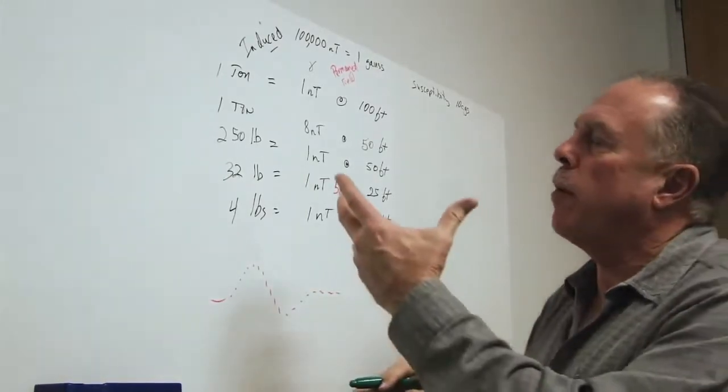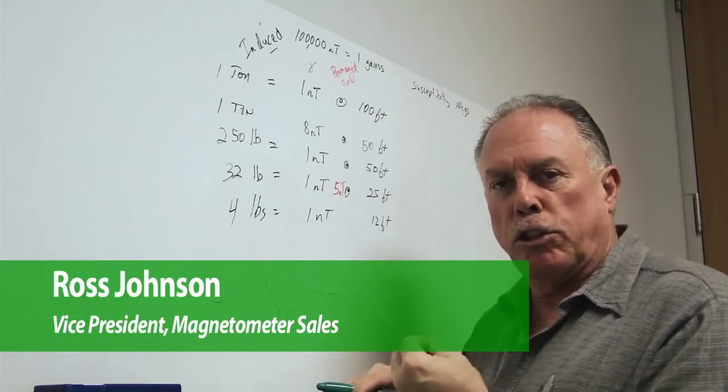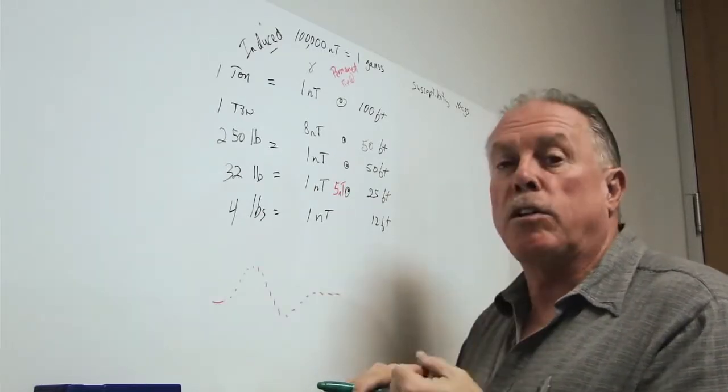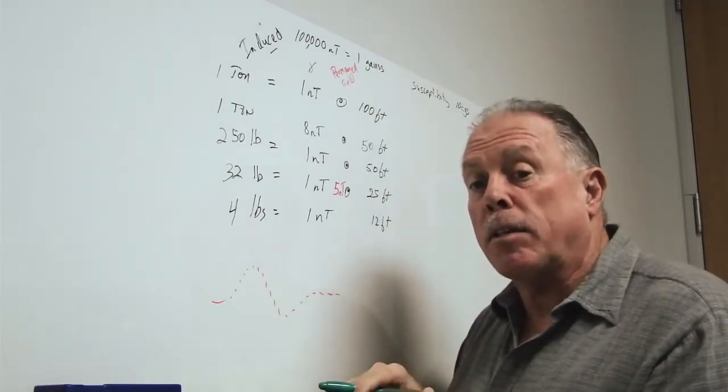Okay, so let's review a little bit about how the objects of our search are distorting the Earth's magnetic field and giving us a response that our magnetometers can detect.